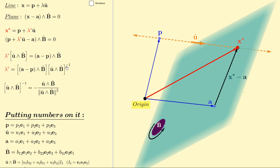What is u hat wedge b hat's multiplicative inverse? It's the negative of that same product divided by the square of the magnitude of it.